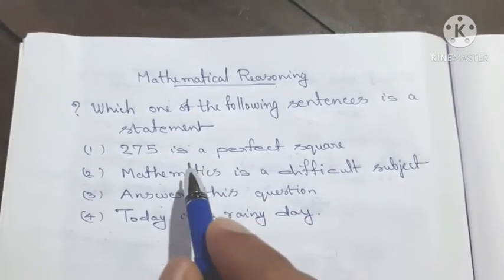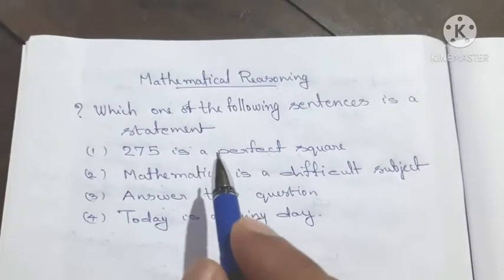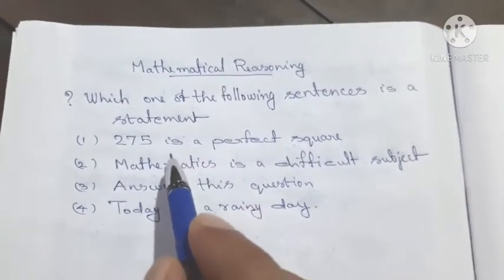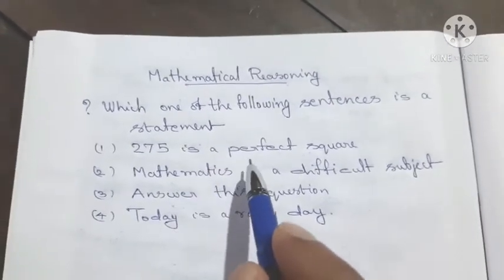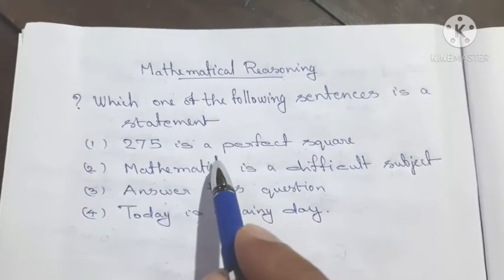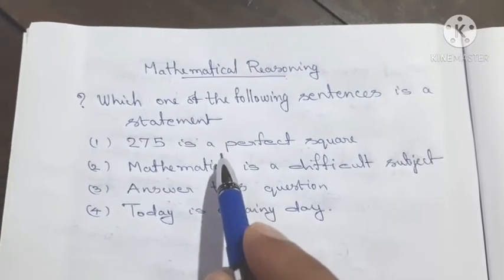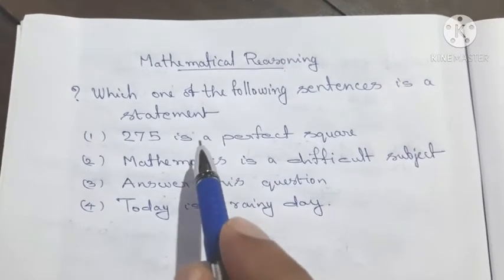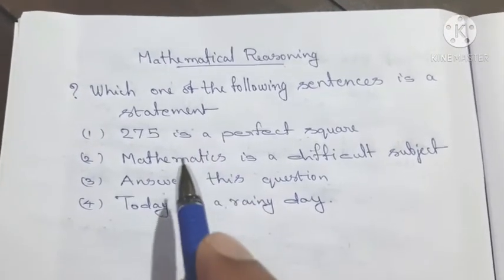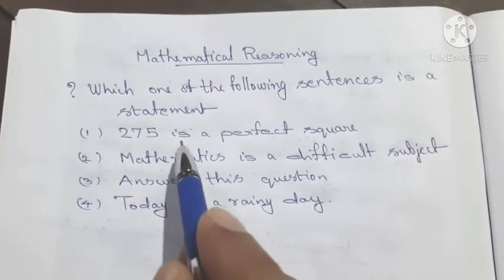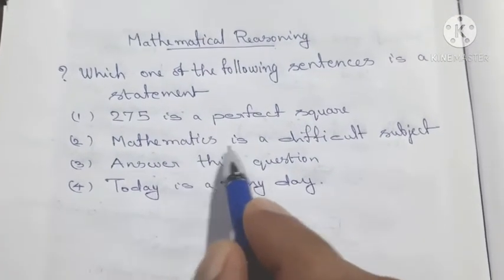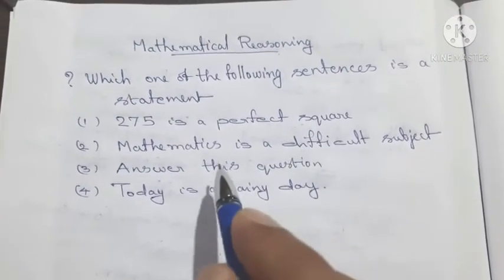The sentence '275 is a perfect square' can be determined as true or false — it is false. Therefore, this is a statement.